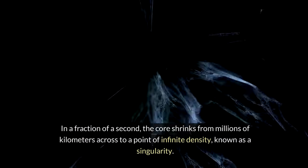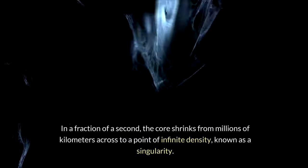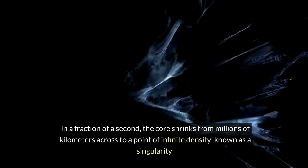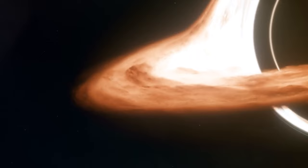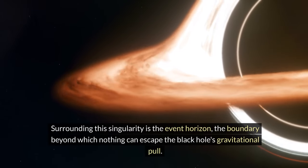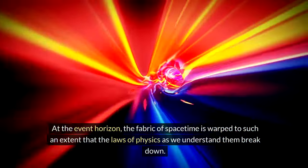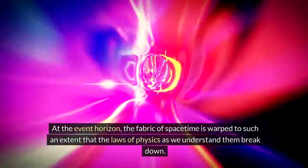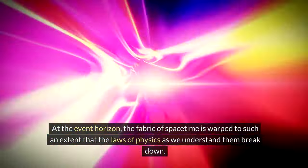In a fraction of a second, the core shrinks from millions of kilometers across to a point of infinite density, known as a singularity. Surrounding this singularity is the event horizon, the boundary beyond which nothing can escape the black hole's gravitational pull. At the event horizon, the fabric of spacetime is warped to such an extent that the laws of physics as we understand them break down.